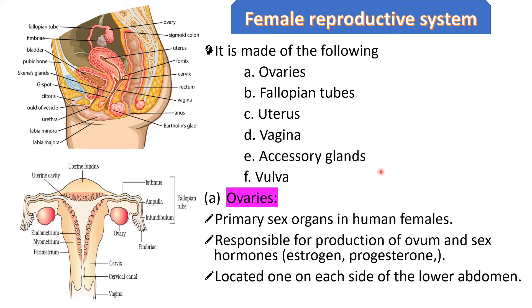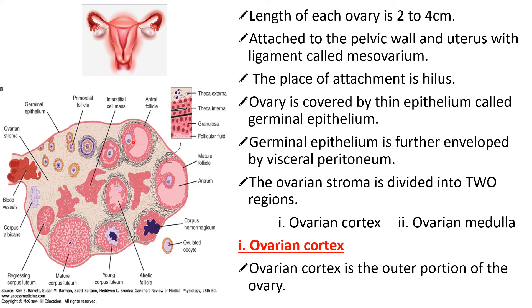First, we look at the primary sex organs in females. They are ovaries. Ovaries are responsible for the production of ovum and sex hormones — the female gametes are produced by the ovaries. A pair of ovaries is present on both sides of the uterus. Inside the ovary, the egg or ovum is formed. Along with that, some steroid hormones or female sex hormones are also synthesized there, like estrogen and progesterone. Ovaries are located one on each side of the lower abdomen. The length of each ovary is 2 to 4 centimeters.